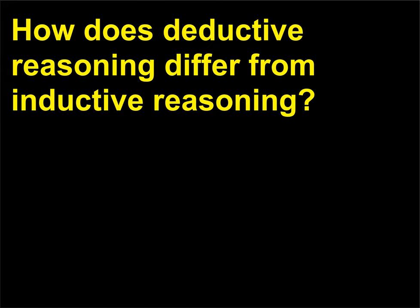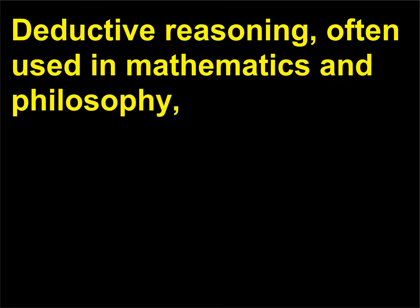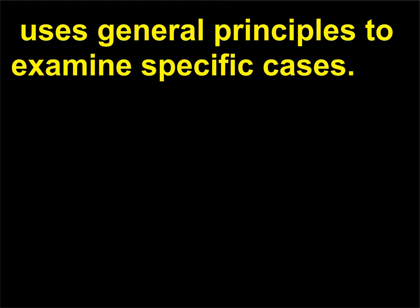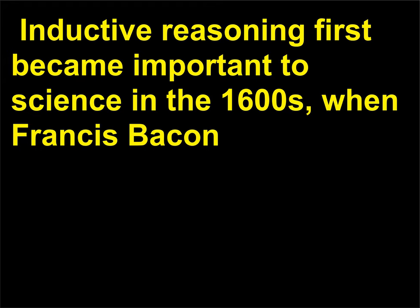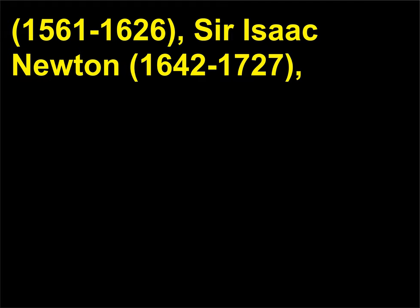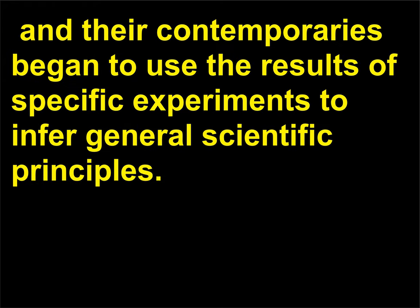How does deductive reasoning differ from inductive reasoning? Deductive reasoning, often used in mathematics and philosophy, uses general principles to examine specific cases. Inductive reasoning is the method of discovering general principles by close examination of specific cases. Inductive reasoning first became important to science in the 1600s, when Francis Bacon (1561–1626), Sir Isaac Newton (1642–1727), and their contemporaries began to use the results of specific experiments to infer general scientific principles.